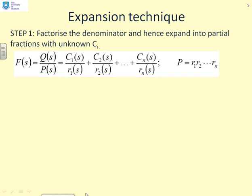So expansion technique, how does it work? Well, the first thing we've got to do is look at where we're heading. We've got F of s equals Q over P equals C1 over r1 plus C2 over r2 and so on up to Cn over rn. And we're going to note that the pole polynomial is the product of all these denominator factors: P equals r1 times r2, all the way up to rn.